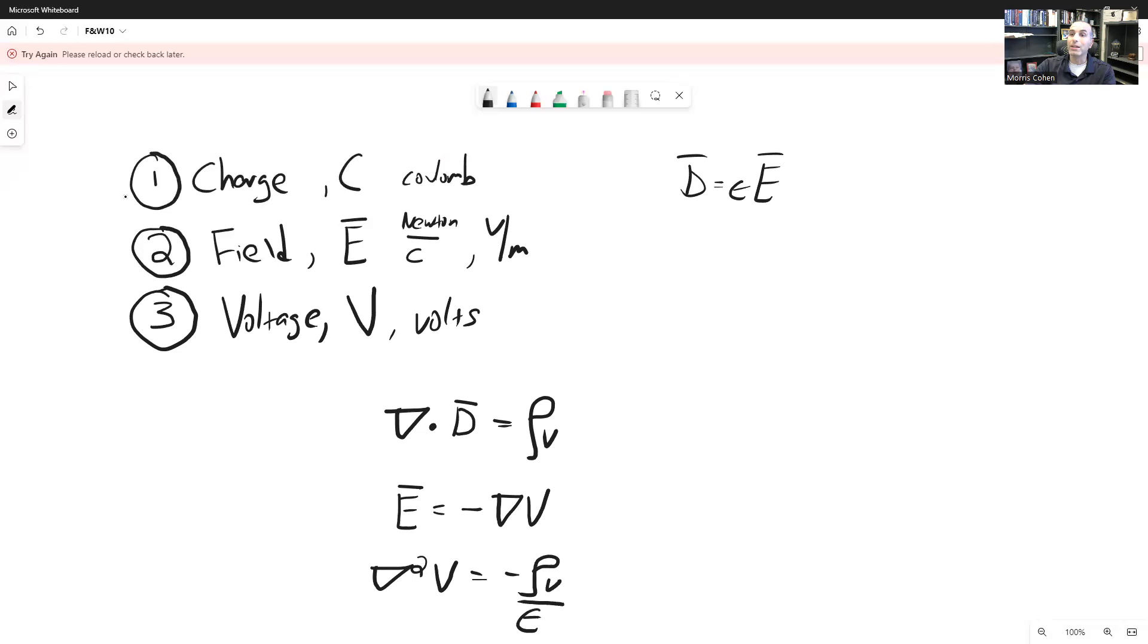And what you notice about all of these is that they are linear. What linear means is that if I double the value of the charge density everywhere, then I must be also doubling the value of the divergence of D, and therefore I'm doubling the value of D everywhere. Same can be said about voltage and electric field. If I double the value of the voltage everywhere, I'm also doubling its spatial gradients, which means I'm doubling the value of the electric field. So these things are all linear and connected to each other.